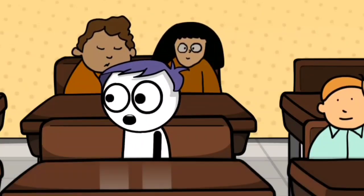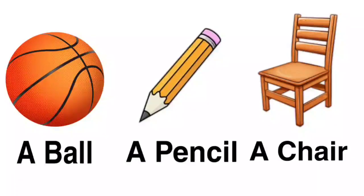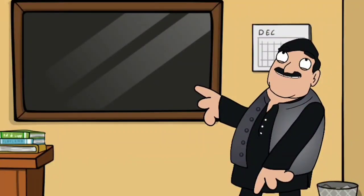I don't understand. Look at this. What do you see? A ball, a pencil, a chair. Good. Ball, pencil, chair. These are names of things. They are nouns.